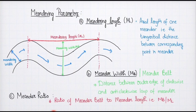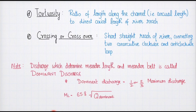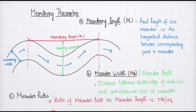Meander length is the distance between corresponding points — for example, from one crest to the next, or one trough to the next. Then we have meander width, also called the meander belt, which is the distance between the outer edge of the clockwise and anti-clockwise loops. The ratio of meander belt to meander length is called the meander ratio. Then we have tortuosity, which is the ratio of the arc length along the channel to the actual direct axial length of the river reach.